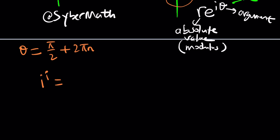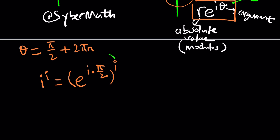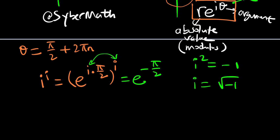So here's how it goes. i to the power i: we express i as e^(i·π/2) — this comes from the polar form with R = 1 and θ = π/2 — and then raise it to the power i. The i's multiply together, giving i squared. Since i² = −1, this simplifies to e^(−π/2). Wow — i to the i is a real number! You take an imaginary number, raise it to an imaginary power, and you get a real number. That's the beauty of i.